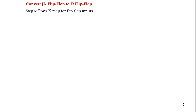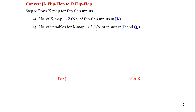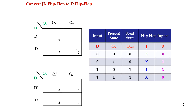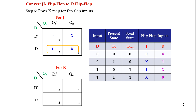The next step is to draw K-maps for the flip-flop inputs. The number of K-maps equals the number of JK flip-flop inputs, which is 2 — one for J and one for K. The number of variables for each K-map is also 2, since inputs are D and Qn. For J, plotting values 0X and 1X gives the expression J = D. For K, plotting values X1 and X0 gives the expression K = D̄.